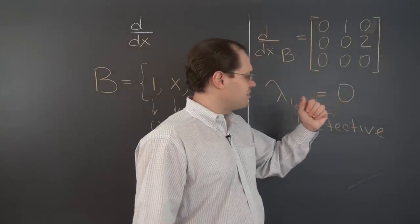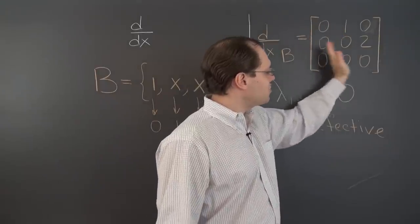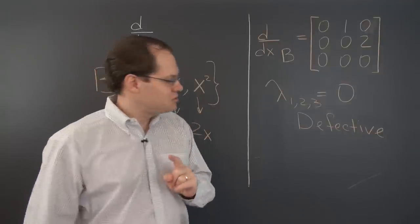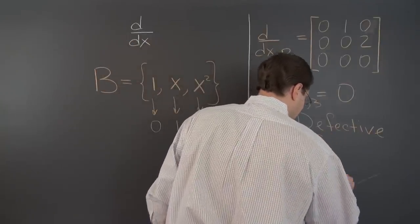Because as you can see, there is only one eigenvector to go around. So proceeding with the eigenvalue procedure, subtract zero from the diagonal, does nothing. And determine the null space of this matrix. And of course it's one dimensional. So there's only a single eigenvector. And it equals one, zero, zero.